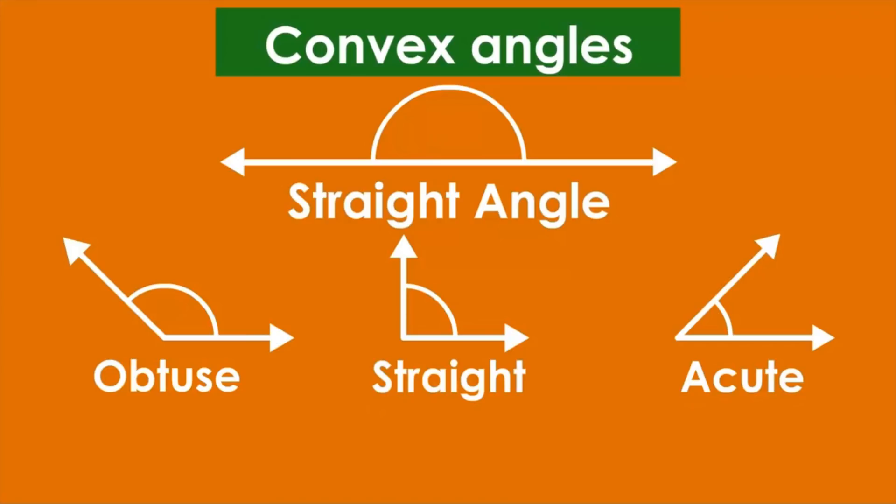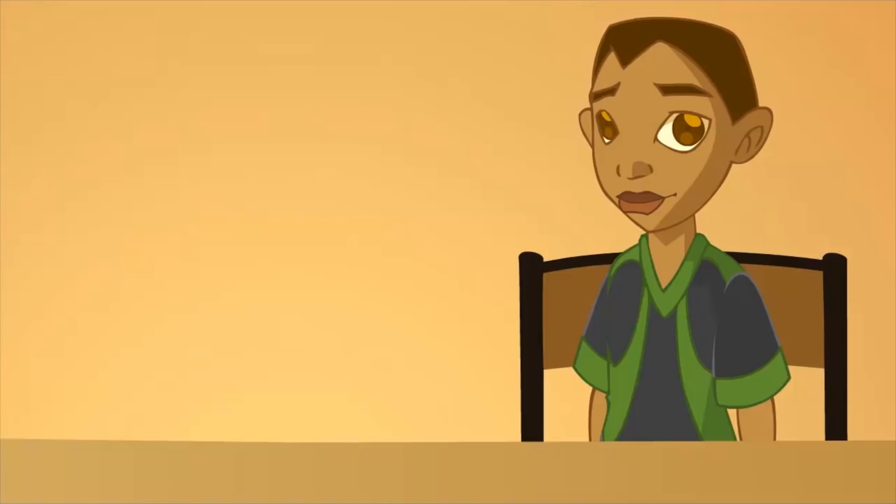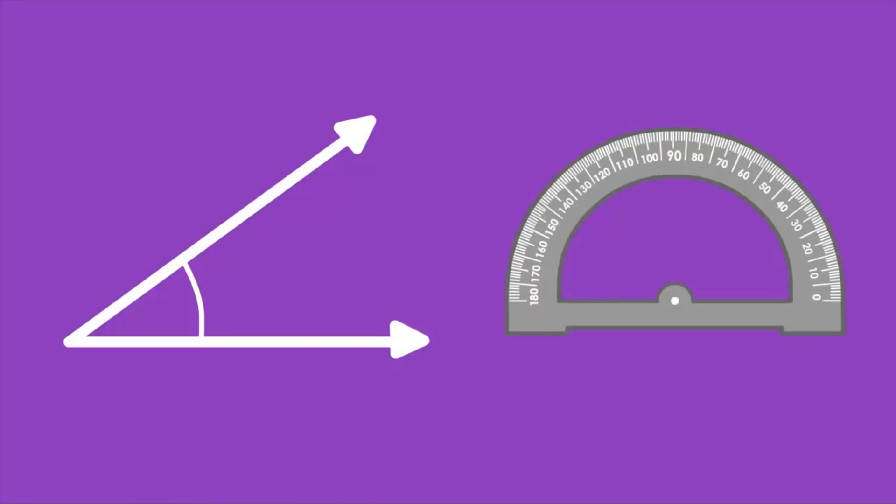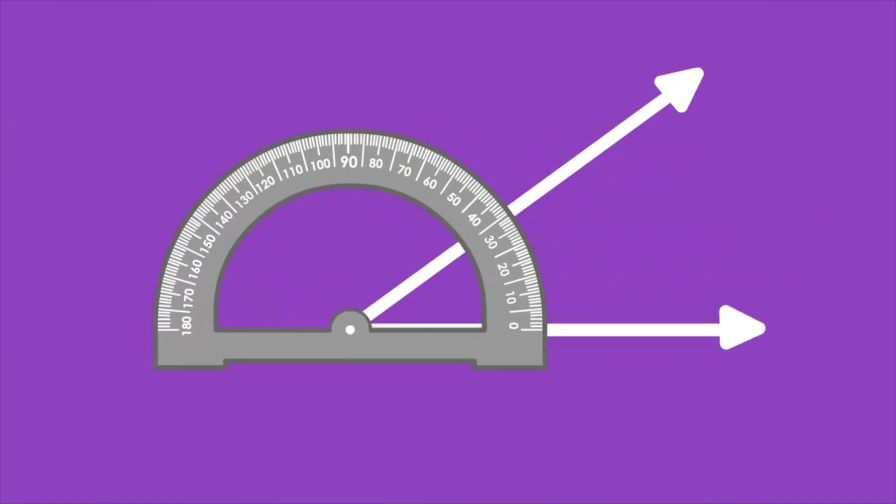Miss, you said that by using protractors we can measure the angles, but how? We must place the protractor on the angle in such a way that its center is on the vertex of the angle and its base on one of its sides.